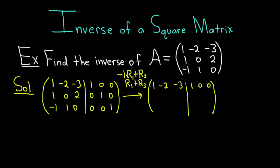Negative 1 times row 1 plus row 2: negative 1 plus 1 is 0; negative 2 times negative 1 gives 2, and 2 plus 0 is 2; 3 plus 2 is 5; negative 1 plus 0 is negative 1; 0 plus 1 is 1; 0 plus 0 is 0. Quickly verifying: 0, 2, 5, negative 1, 1, 0.